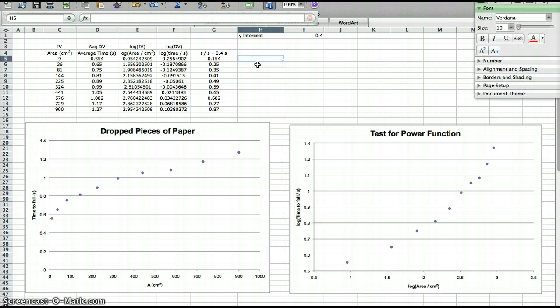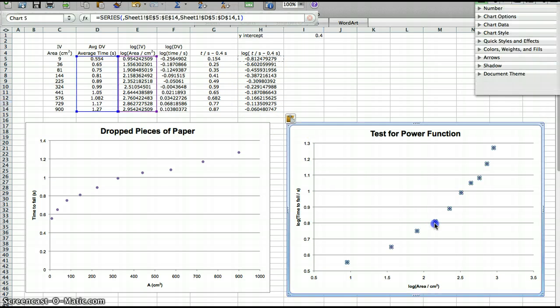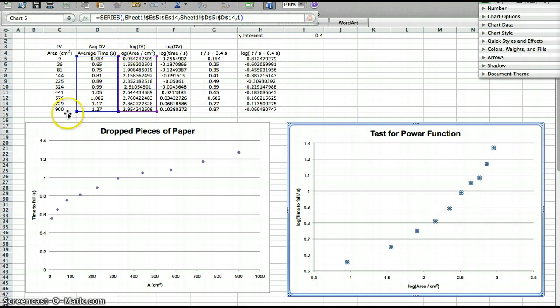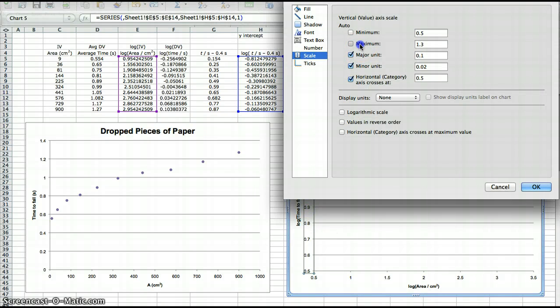Now we're going to take the log. Log of t in seconds minus 0.4 seconds. Taking the log of that, copy it down. And instead of doing a log-log graph with a y-intercept on data which has a y-intercept, now we're going to do a log-log graph on the data which has no y-intercept at all. And let's add that back.